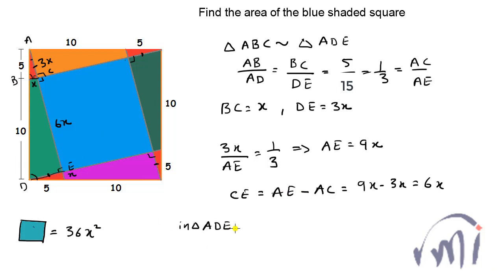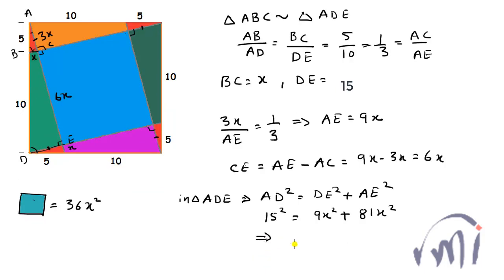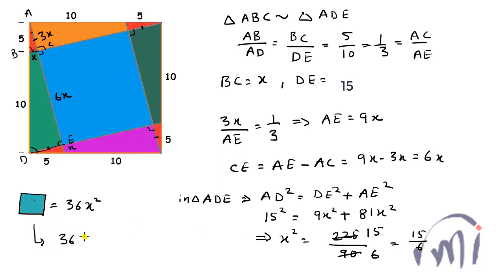In triangle ADE, which is a right angle triangle, AD² equals DE² plus AE². AD is equal to 15, so 15² equals (3x)² plus (9x)², which gives 225 equals 9x² plus 81x², that is 90x². Therefore x² equals 225 divided by 90, which simplifies to 15 over 6. So the area equals 36 multiplied by 15 over 6, and 15 times 6 equals 90. That means the area of the shaded square is 90 square units.